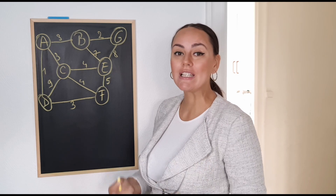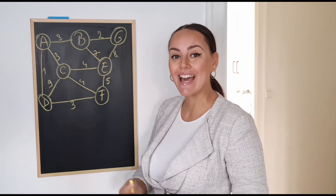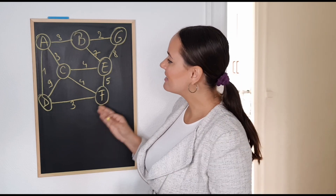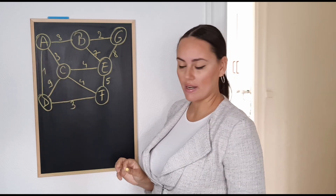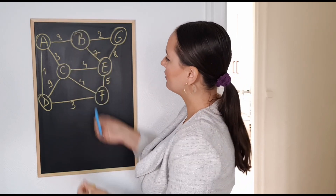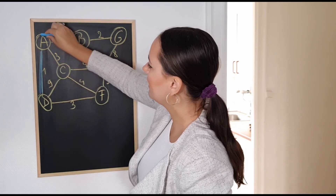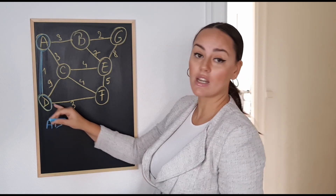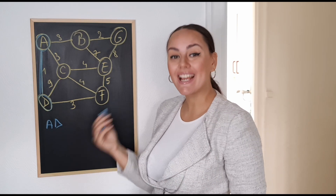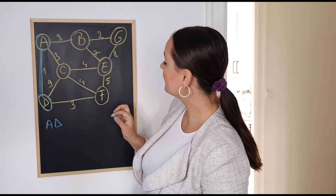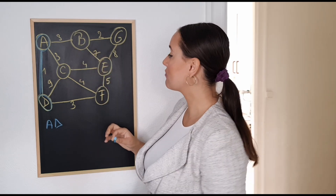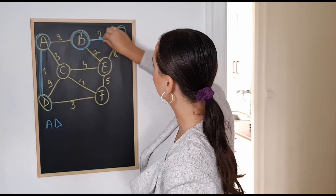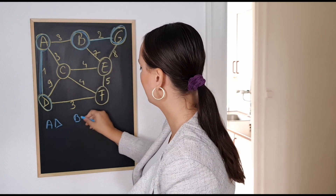What we need to do is look at the globally smallest edge weight in our graph and add that to our minimum spanning tree. We can see that the globally smallest edge weight is the edge A and D, which has a weight of 1. So I'm going to color that with blue so we can differentiate. A and D is in our minimum spanning tree. Now we take a look at the next smallest edge — B and G, with edge weight of 2 — and add that to our minimum spanning tree.